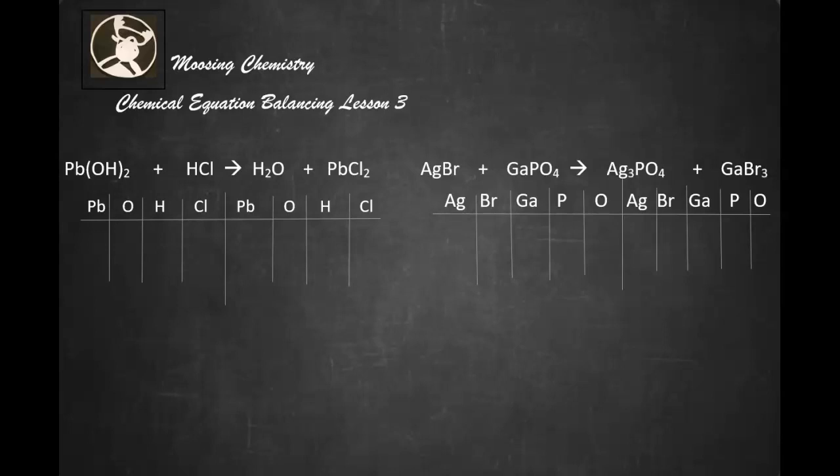We have an acid-base reaction in the first reaction, which is Pb(OH)2 plus HCl yields H2O plus PbCl2. So the OH is the base and the HCl is the acid, which will produce water and a salt.